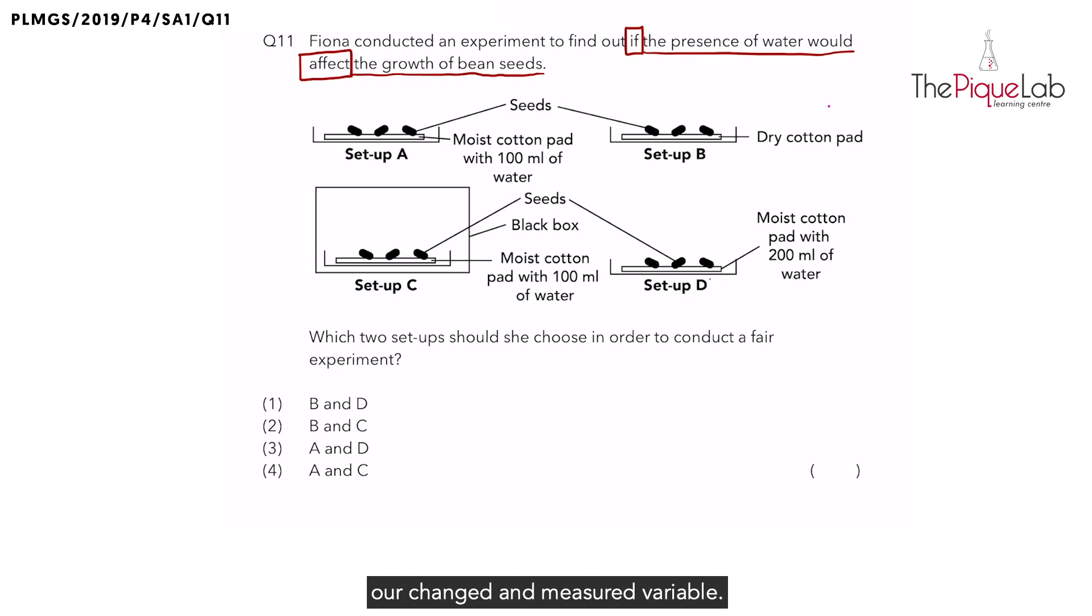Why do we underline these words? It's because it actually indicates our change and measured variable. So I want to find out if the presence of water, that would be my change variable, affects the growth of the bean seeds, that's my measured variable.